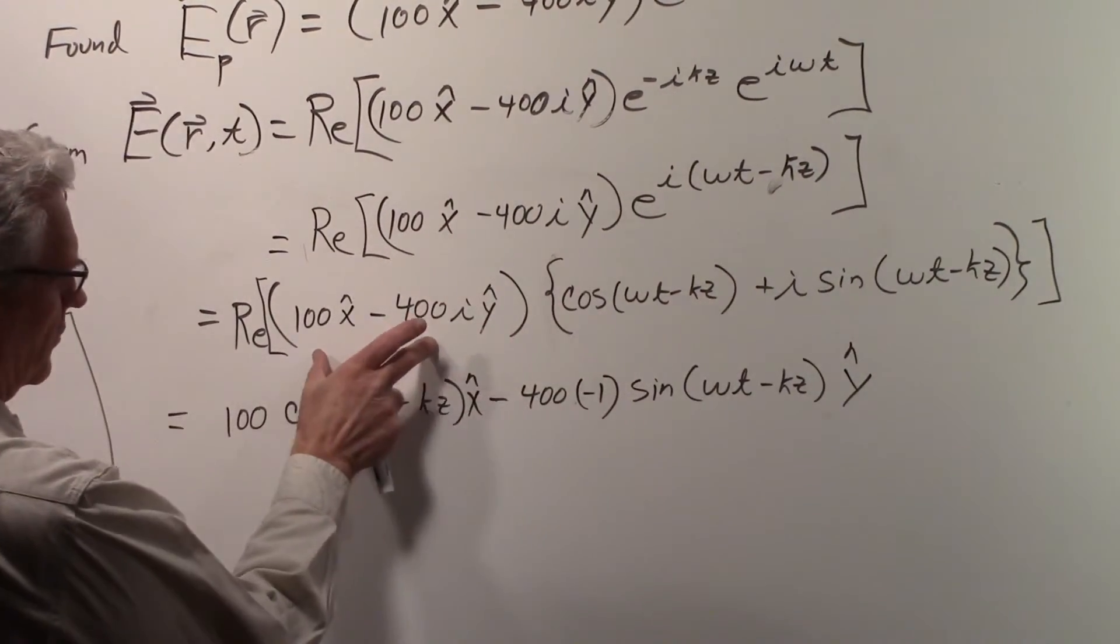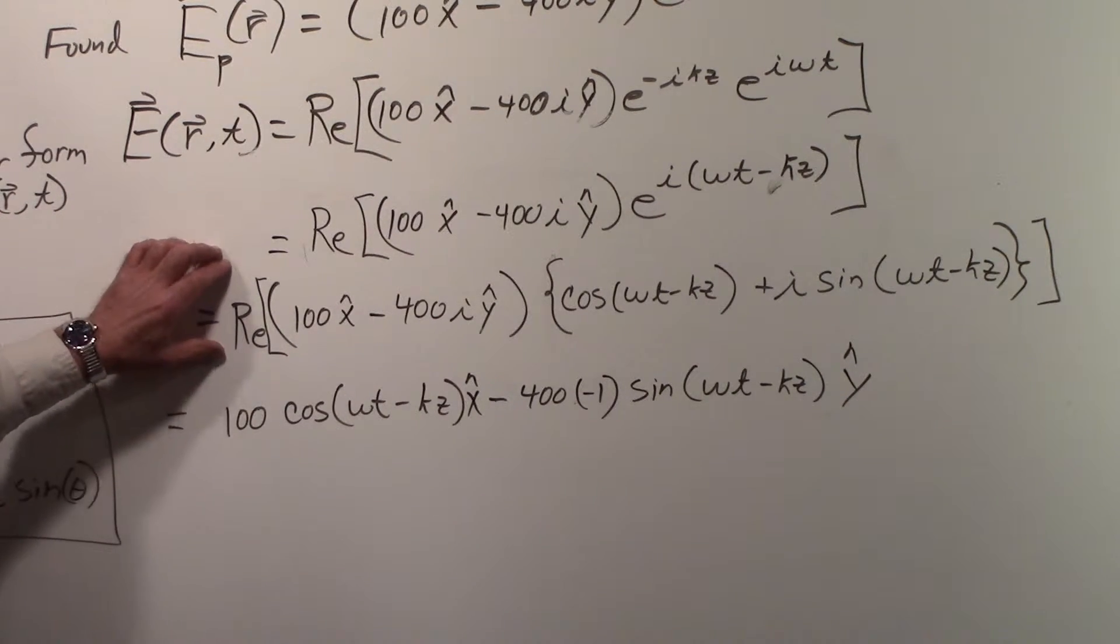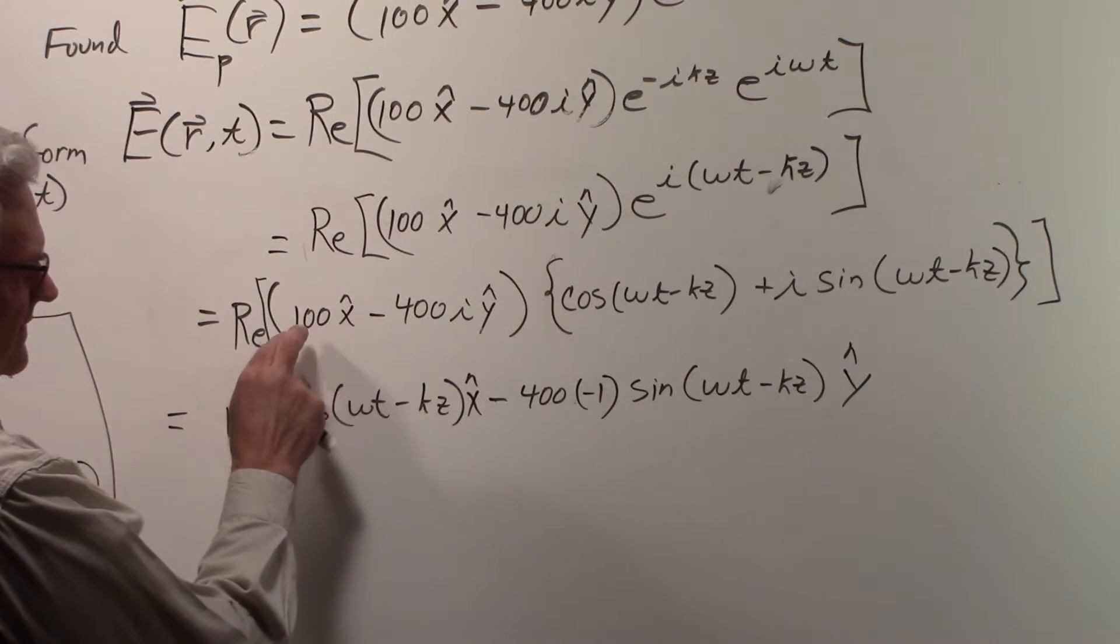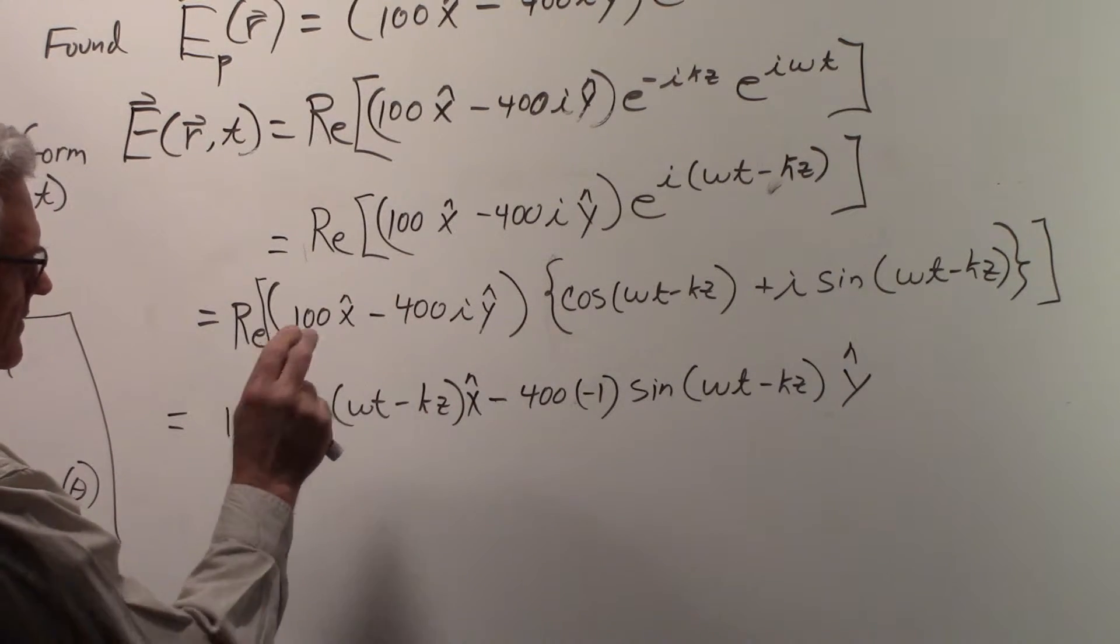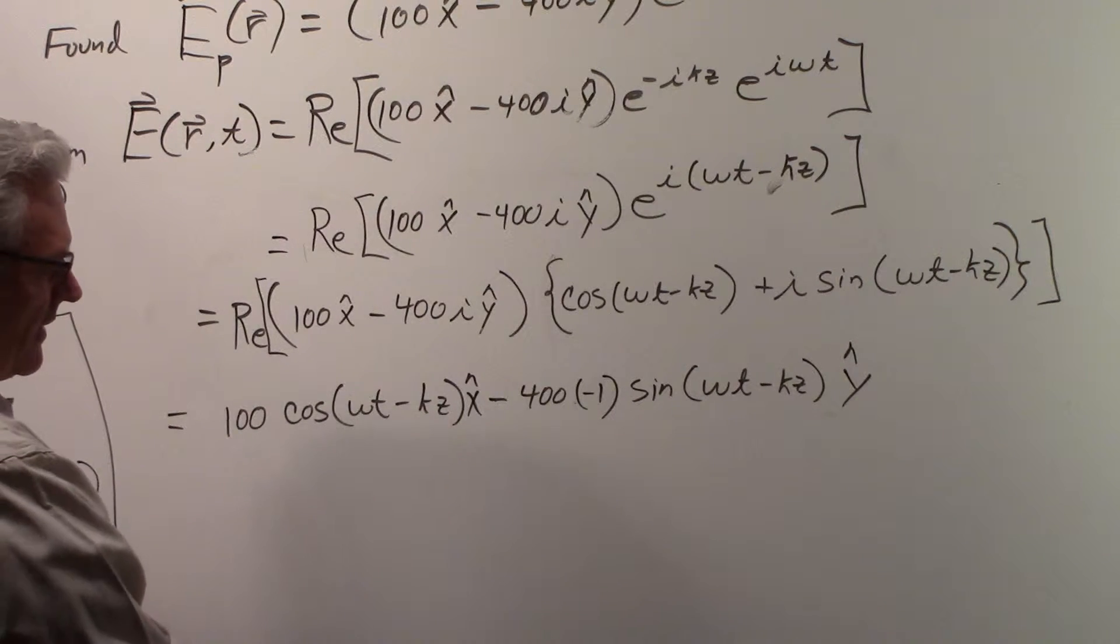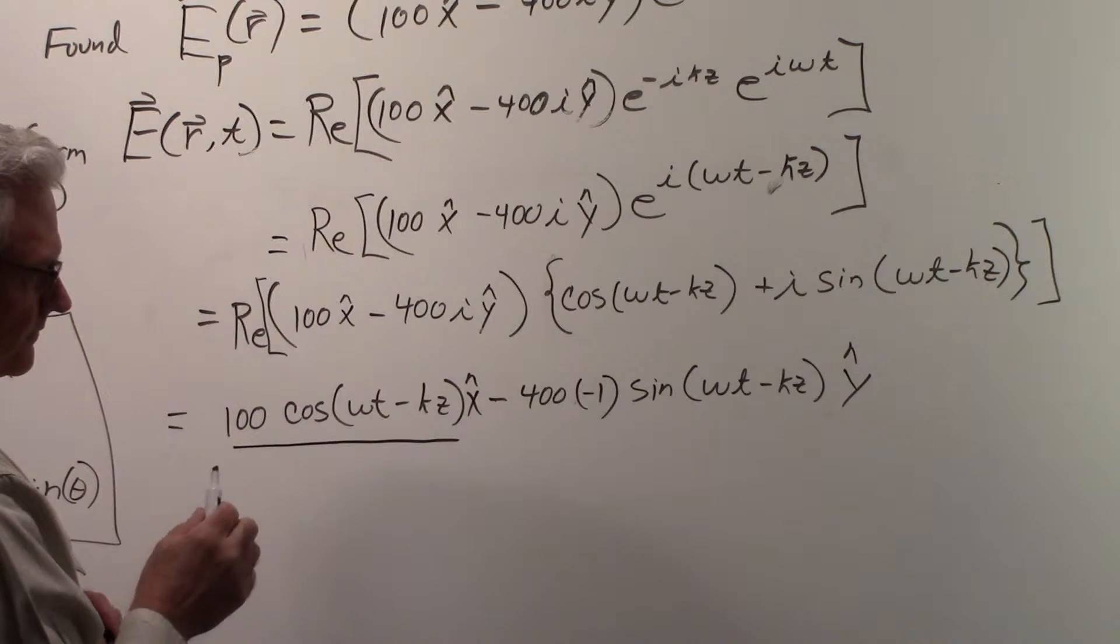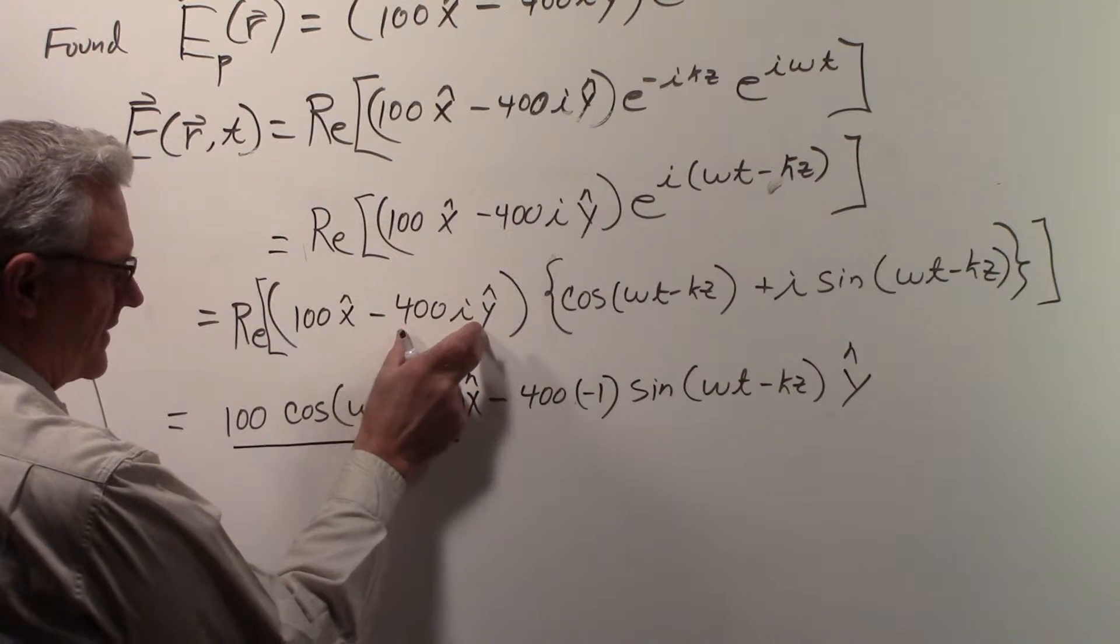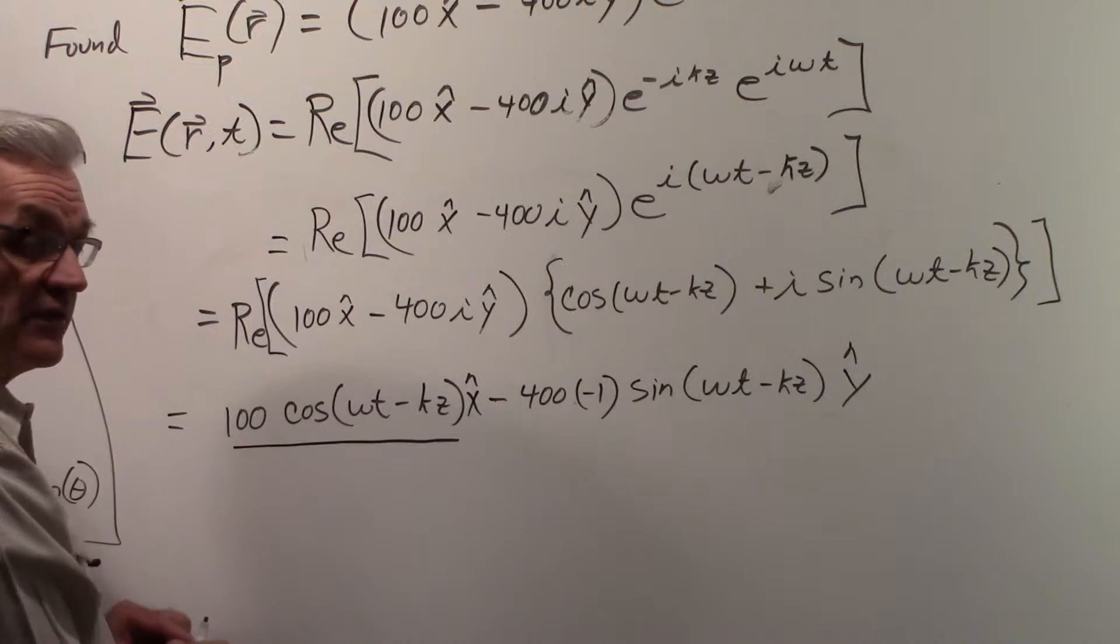So we have this term here multiplying this term here, and we're going to take the real part. You can see when we multiply by the cos(ωt - kz) times the 100x, there's no i involved, there's no complex number, so the real part of that will give us the 100·cos(ωt - kz). When we multiply the cosine term times the coefficient for the y component, we'll have a complex number, so when we take the real part of that, that will go away.